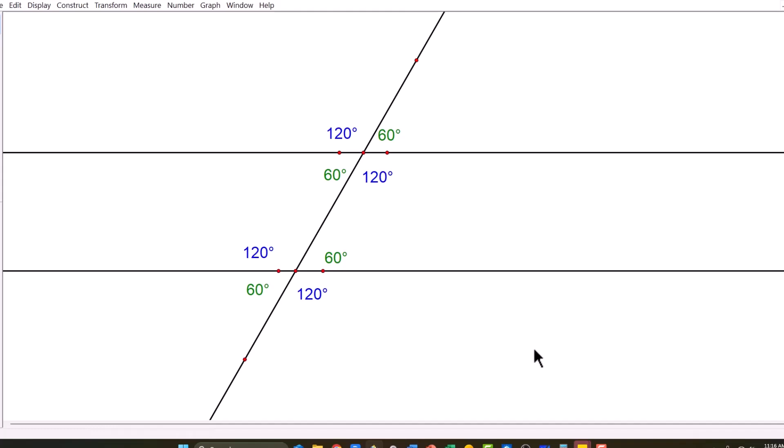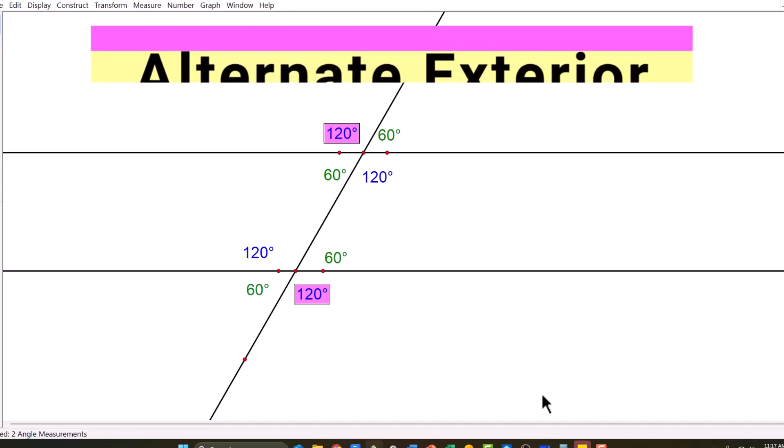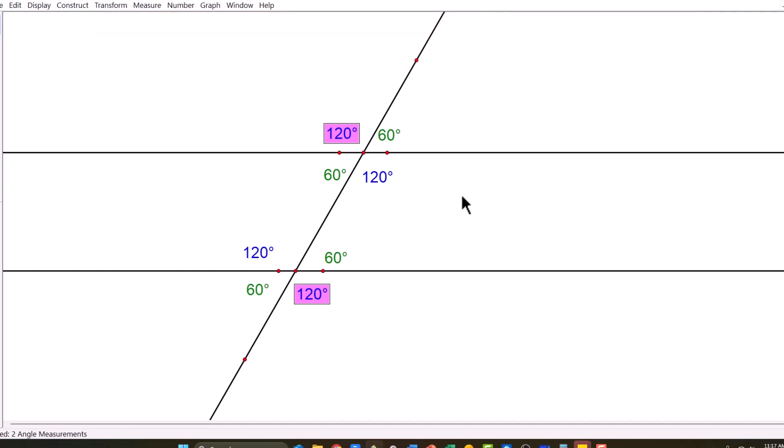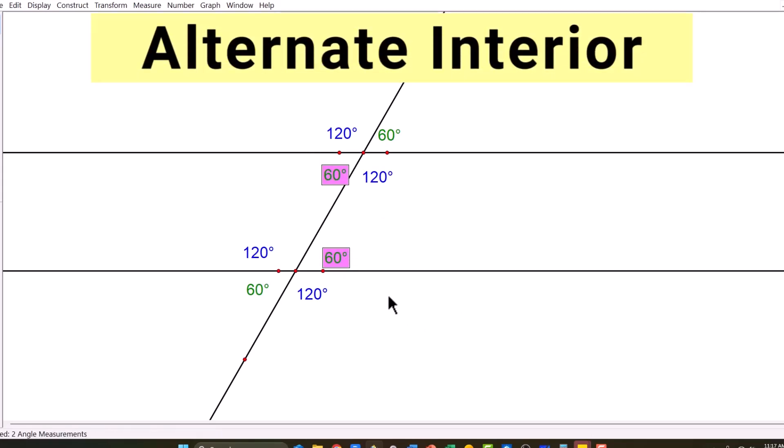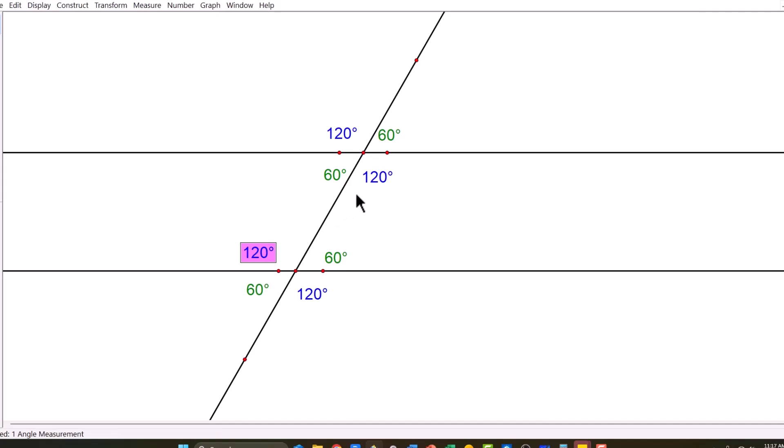And if you look, all the corresponding angles are equal to each other. The alternate exterior angle, look at that, that's also equal to each other. And that other pair of alternate exterior angles are equal. The alternate interior angles are congruent as well. But the same side interior, those guys aren't congruent. They're not equal to each other. But look what they add up to.